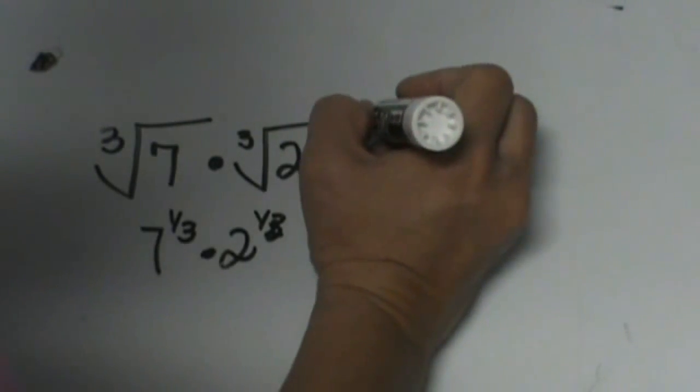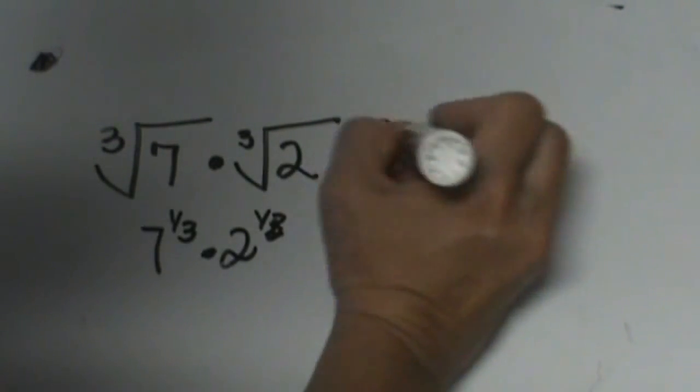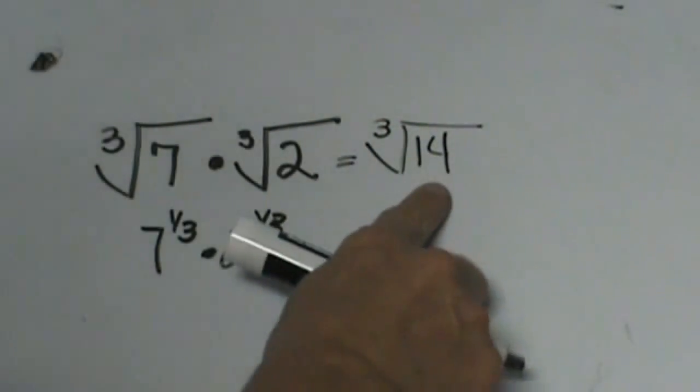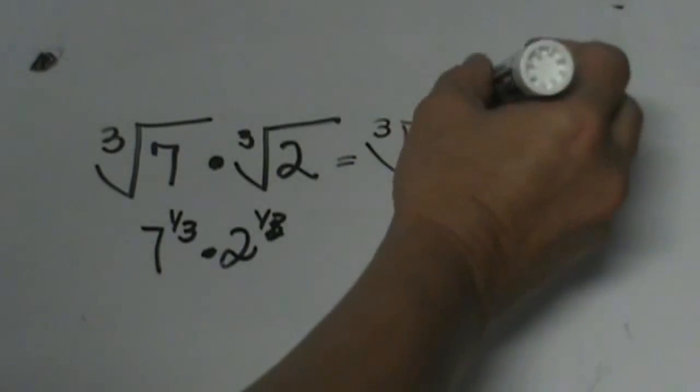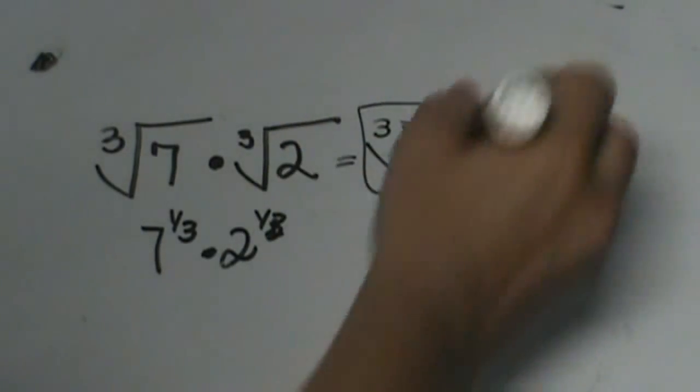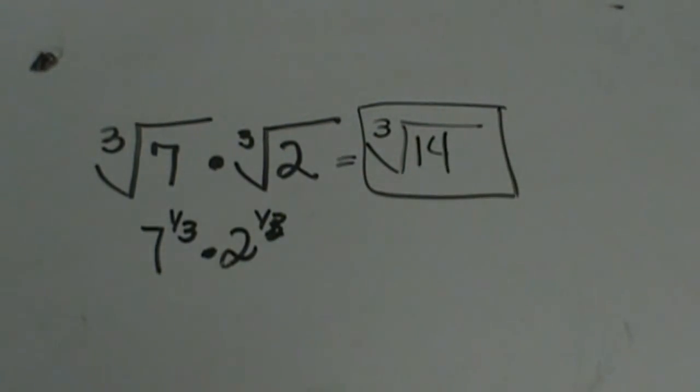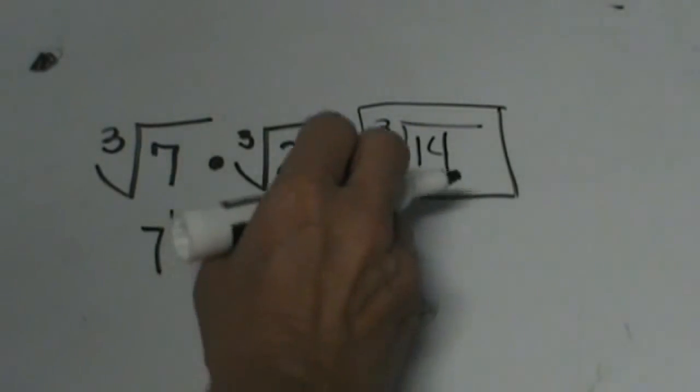So I can simplify that to the cube root of 14. Now we know that the cube root of 14 only breaks down to 2 times 7, so you can't simplify that, but that would be the answer. And that is how you would work that problem.